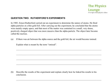He fired alpha particles at a thin gold foil. After carrying out the experiment, he concluded that the atoms were mainly empty space, and that most of the matter was contained in a very small, very dense, positively charged object that was more massive than the alpha particle. The object later became called the nucleus.